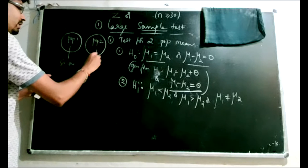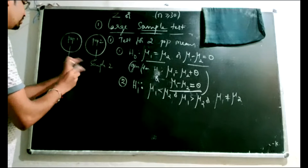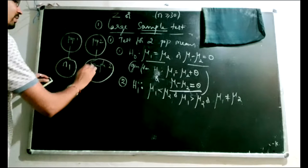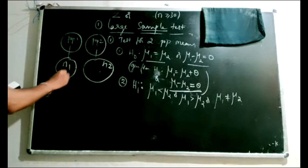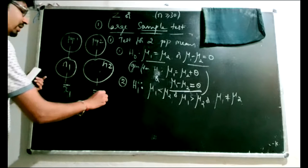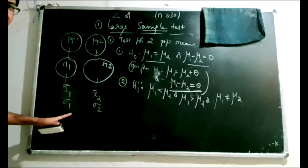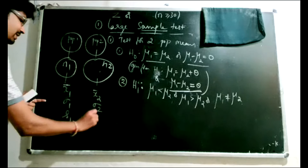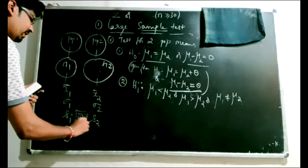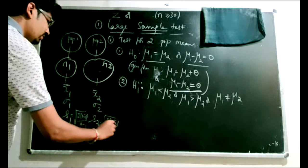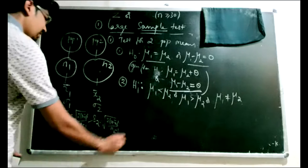You select sample 1 and sample 2. Since it is a large sample test with two samples, I will use the notation n1 and n2. I have selected n1 items from the first population and n2 items from the second population, where both n1 and n2 are strictly more than 30. From these samples you obtain x1-bar and x2-bar. If you know the population variance, you have sigma1 and sigma2; if unknown, use the sample standard deviations s1 and s2, computed as the square root of sigma(x minus x-bar) squared divided by n minus 1.